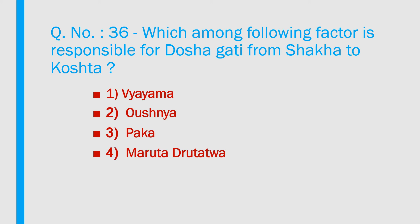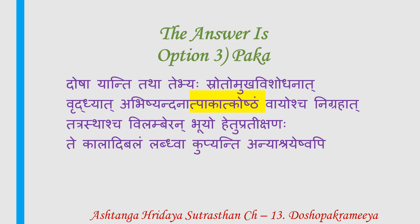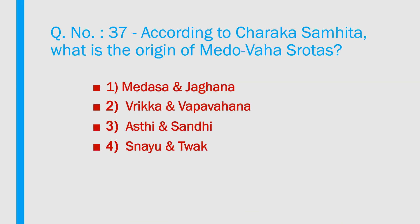Question number 36: Which among the following factors is responsible for doshagadhi (movement of doshas) from shakha to koshta? 1) Vyayama, 2) Aushnya, 3) Paga, 4) Marudha drudhatva. Answer is option 3 — Paga. The relevant verse states that dosha movement to koshta occurs through sroto mukha vishodhana, brudhyat abhishyandhanat, and paga. Reference: Ashtanga Hridaya Sutrastana, chapter 30, Doshabhakramaniya.